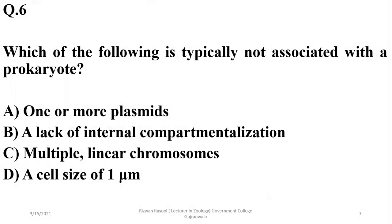Which of the following is typically not associated with prokaryotes? Prokaryotes may have one or more plasmids, they may lack internal compartments, and they have a cell size of around one micrometer or smaller. However, multiple linear chromosomes is a characteristic of eukaryotic cells only, so Charlie is the right option in question number six.